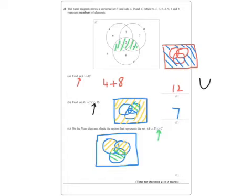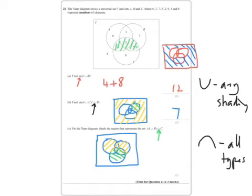If you've got this symbol here, you shade anything that has any form of shading on. And if you've got this, so that's any. And that's any shading. And this symbol here means you've got to have all types of shading. So that's what to look out for.